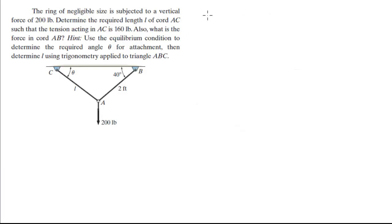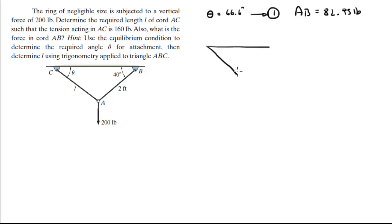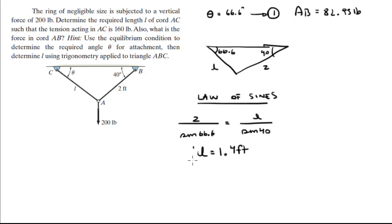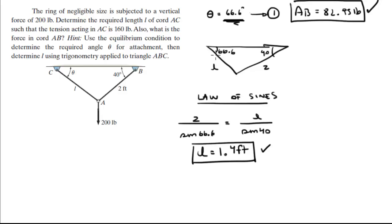For theta equal to 66.6 degrees, plugging into equation 1 gives AB equal to 82.95 pounds. Redrawing the triangle with angles 66.6 and 40 degrees and the same side of 2, using the law of sines: 2 over sine of 66.6 equals L over sine of 40. Solving gives L equal to 1.4 feet. This is the final answer for theta equal to 66.6 degrees.